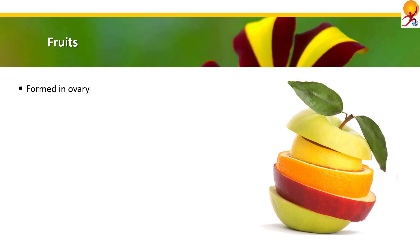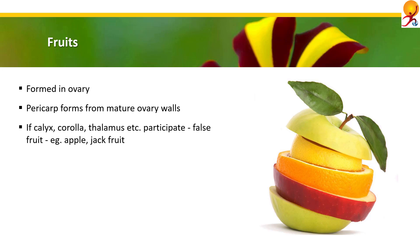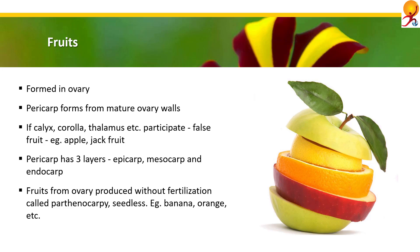Moving on to fruits: the fruit is usually formed in the ovary of the plant, and pericarp is formed from the mature ovary walls. But in formation of some fruits like apple, jackfruit, etc., calyx, corolla, and thalamus also participate — such fruits are called false fruits. Usually pericarp has three layers: the outermost layer called epicarp, the middle layer called mesocarp, and the innermost layer called endocarp. Coconut coir is an example of mesocarp. In some plants, fruits are produced from the ovary without fertilization; this process is called parthenocarpy, and such fruits are seedless — examples include banana, papaya, orange, and grapes.